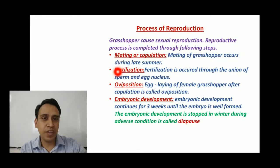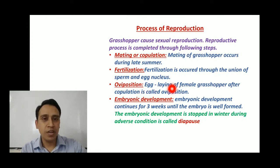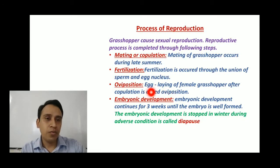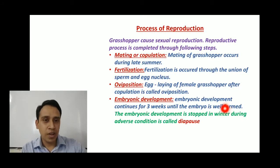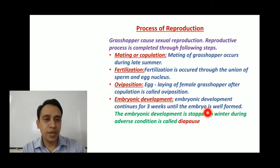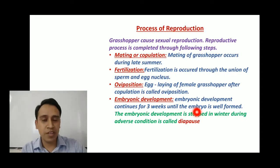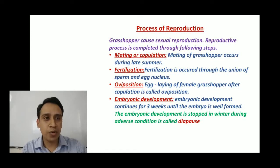Then comes oviposition. Egg laying by the female grasshopper after copulation or mating is called oviposition. During oviposition, the female grasshopper forms a tunnel in the soil by using its ovipositor to deposit its eggs. Then, embryonic development continues for three weeks until the embryo is well formed. The embryonic development is stopped in winter during adverse conditions — this is called diapause. This is an important knowledge-based question: the embryonic development of grasshopper stopping in winter during adverse conditions is known as diapause.